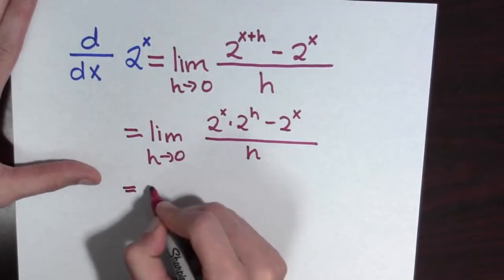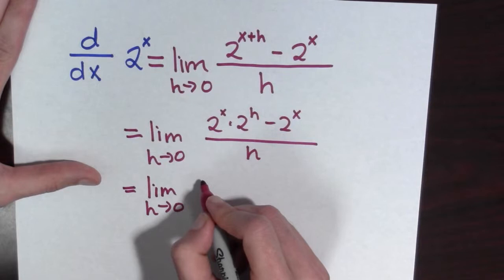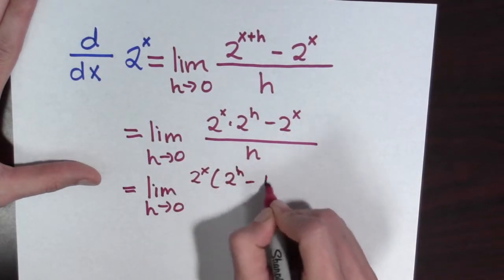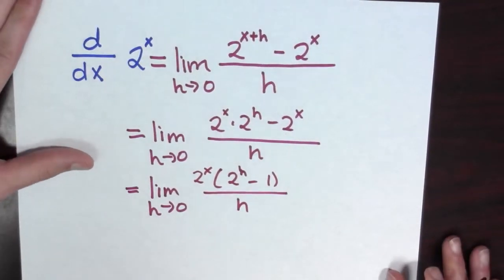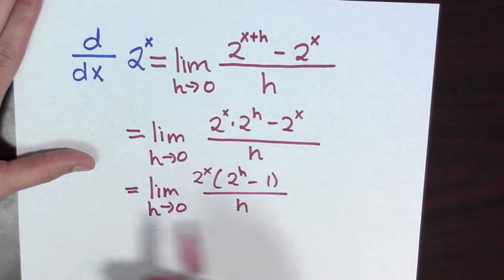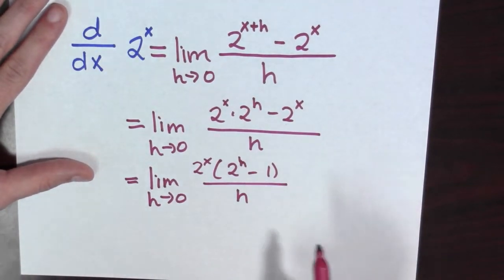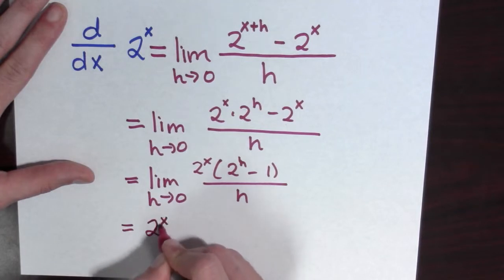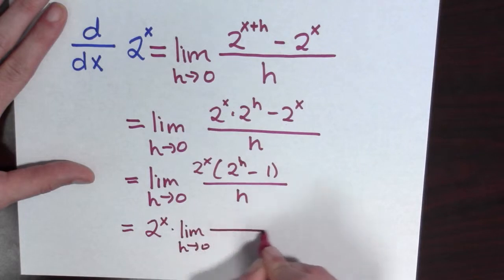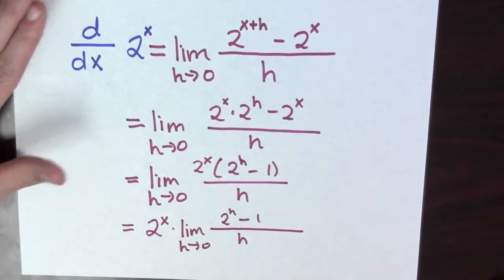Now I can factor out a 2 to the x. So I have the limit as h goes to 0 of 2 to the x times (2 to the h minus 1) all over h. Now I have a factor of 2 to the x — there are no h's in it, so I can pull that outside of the limit. So now this is equal to 2 to the x times the limit as h goes to 0 of (2 to the h minus 1) all over h.